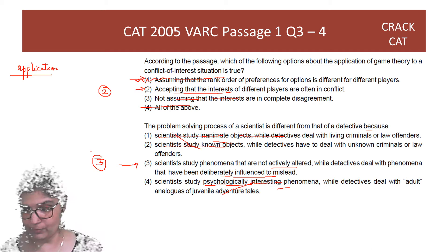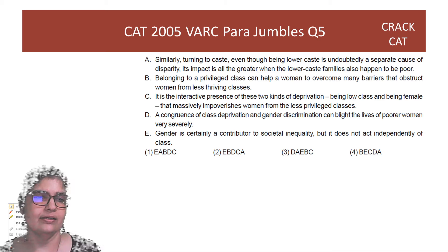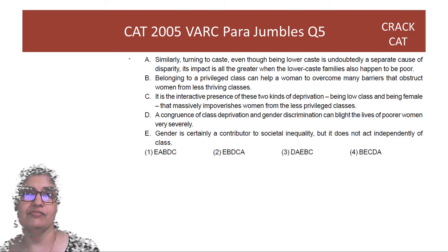Now let's look at the para jumble paragraphs. Very interesting — five sentences you have to arrange in the right order so that they make a coherent paragraph.